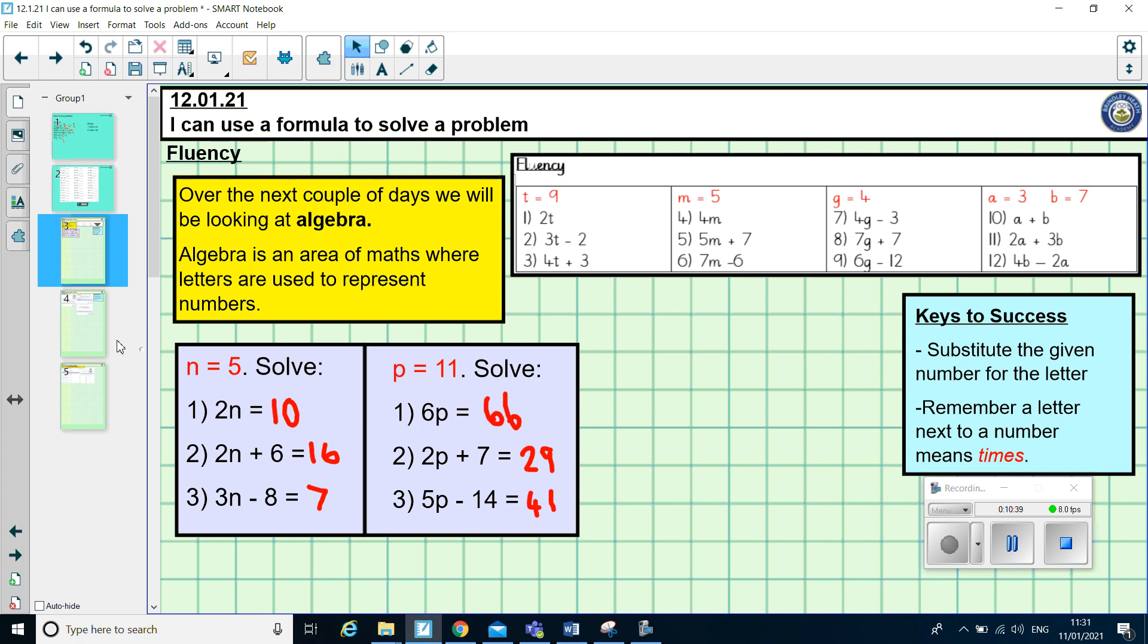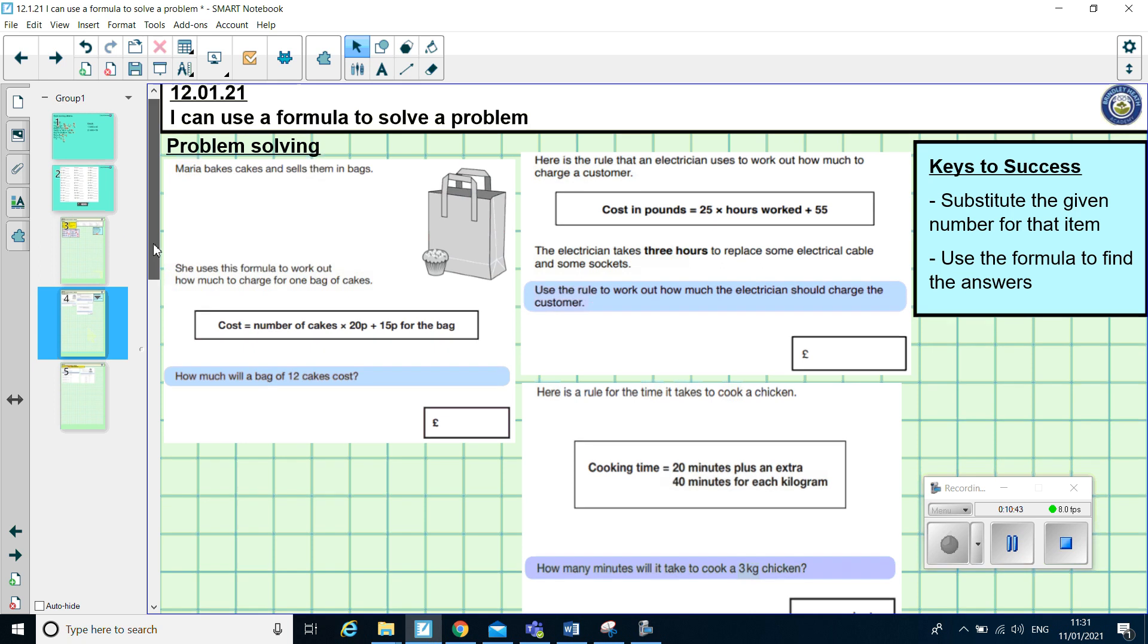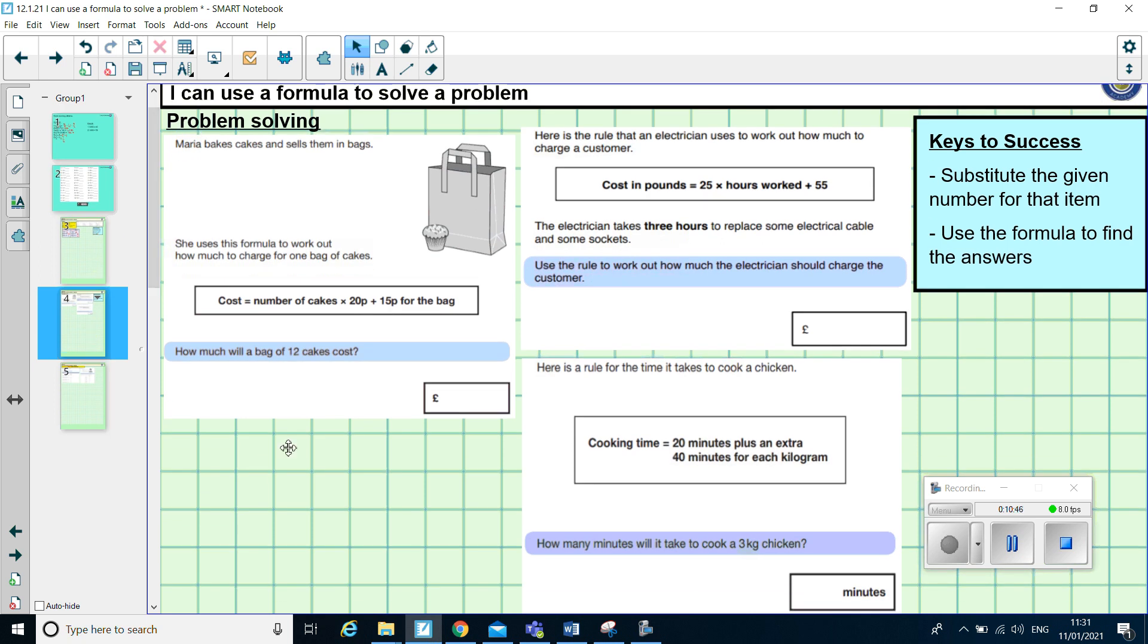For our problem solving today, which again is on Maths.co.uk, we're still going to be looking at formulas. But this time, rather than it just being straightforward number formulas, we've got some worded problems. So, the first question we'll have a look at now. So, Maria bakes cakes and sells them in bags. She uses this formula to work out how much to charge for one bag of cakes. The cost equals the number of cakes times 20p, add 15p for a bag. How much will a bag of 12 cakes cost? When you first look at that question, it sounds like a lot of words. And it looks really, really complicated to solve. But all we've got to do is we've got to put this number into that formula.